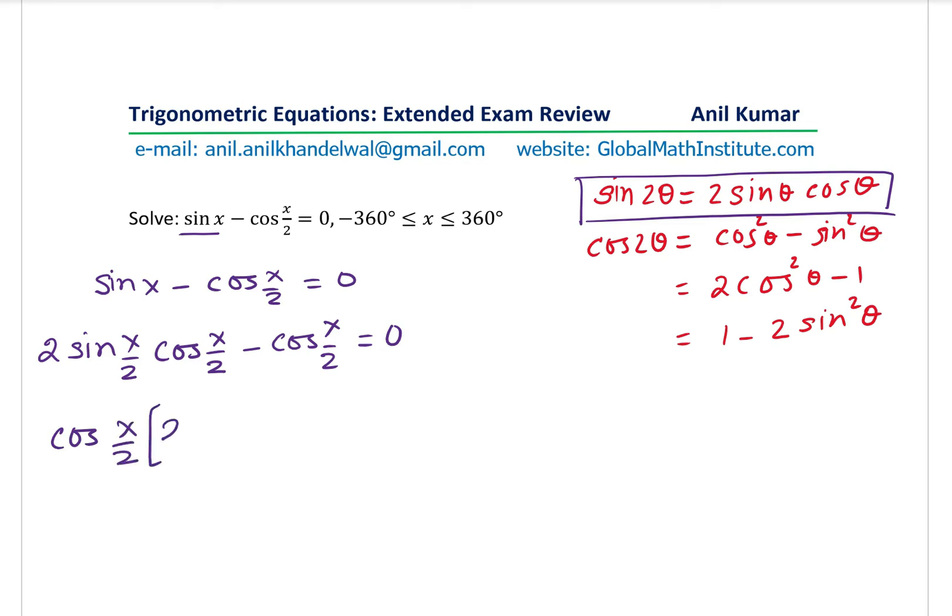So I get 2 sin x by 2 minus 1 equals 0. In this factored form, we are now looking for cos x by 2 equals 0 and 2 sin x by 2 equals 1, or you can say sin x by 2 equals to half. So I hope you understand and appreciate what we've done here.